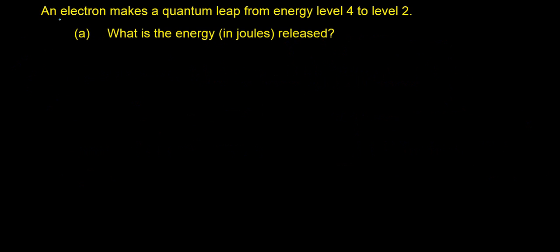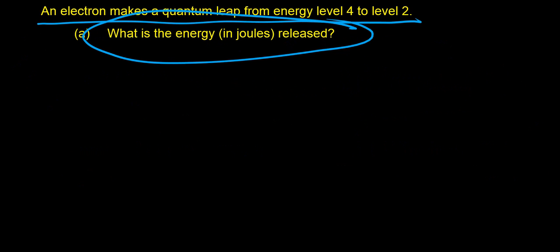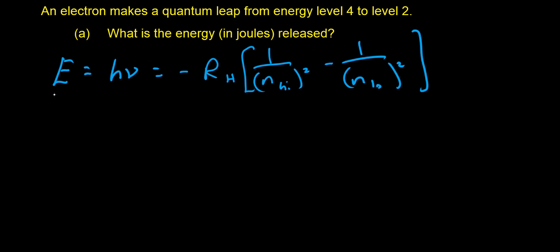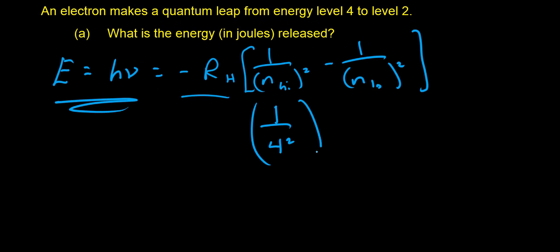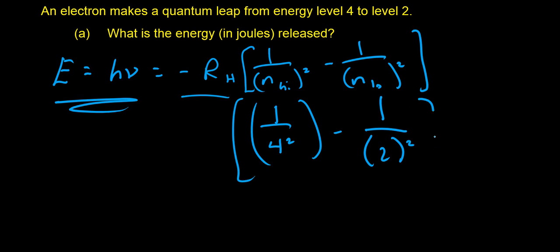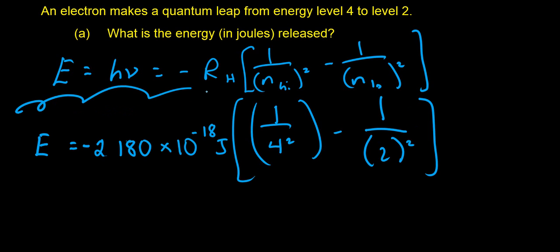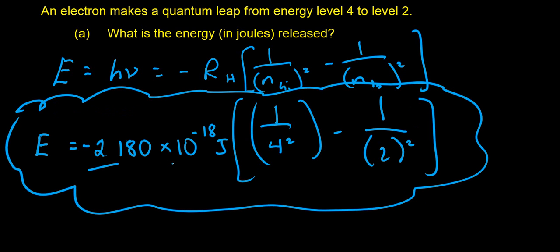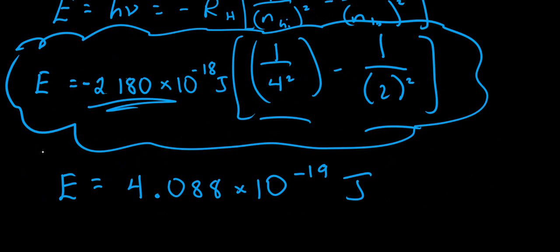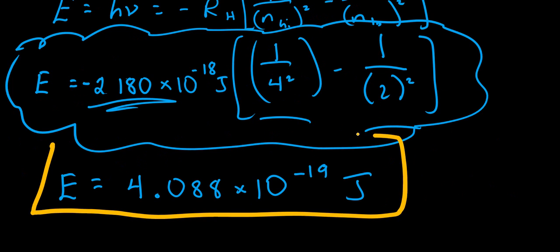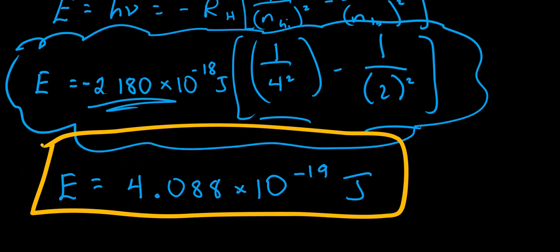Let's go through a sample problem. An electron makes a quantum leap from energy level 4 down to level 2. We want to find the energy released by this quantum leap. Using E = –R_H × (1/n_high² – 1/n_low²), our n_high is 4 and n_low is 2. So we calculate using the Rydberg constant with 1/4² minus 1/2². Solving, the energy released by a single photon of light jumping from level 4 to level 2 is 4.088 × 10⁻¹⁹ joules.